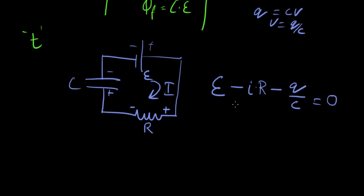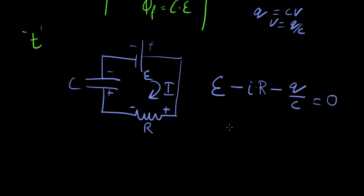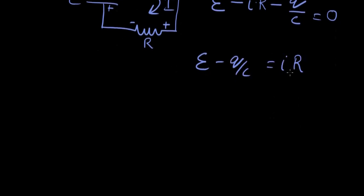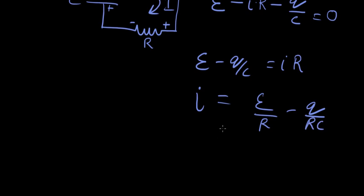We have to derive an equation for current. So let's isolate the i from this equation. So what we get is e minus q over c equals i times r. And here let's divide the entire equation by r. So we get i equals e over r minus q over rc.